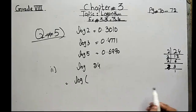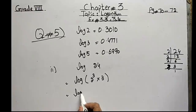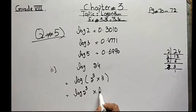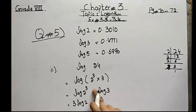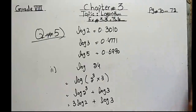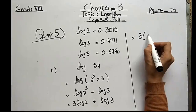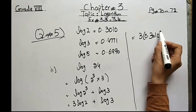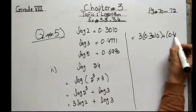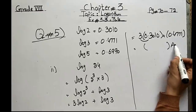Apply the log on 2³ × 3. The power 3 is written in front: 3·log(2) + log(3). Put the value of log(2) = 0.3010, so 3 × 0.3010, then plus log(3) = 0.4771. Multiply 3 by 0.3010, then add 0.4771, and you will get the final answer.